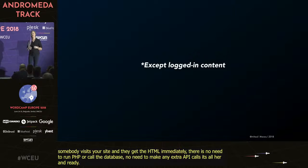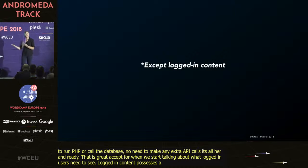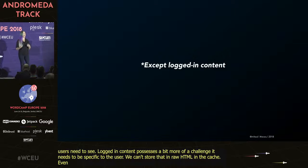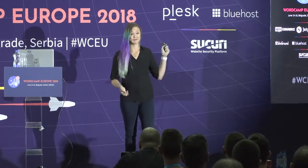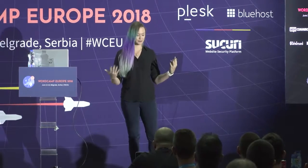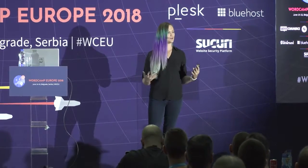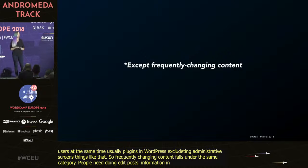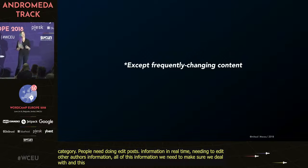That's great, except when we start talking about what logged-in users need to see. Logged-in content poses a bit more of a challenge — it needs to potentially be specific to the user. We can't store that in raw HTML in the cache unless it's specific to that user. Full page cache doesn't solve that issue. Similarly, if we're talking about admin content and frequently changing content, when you're dealing with a ton of logged-in users at the same time, usually even caching plugins in WordPress are excluding any logged-in content, any administrative screens, and frequently changing content falls under the same category.